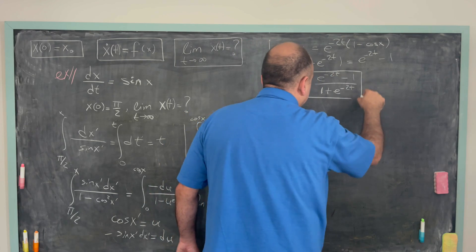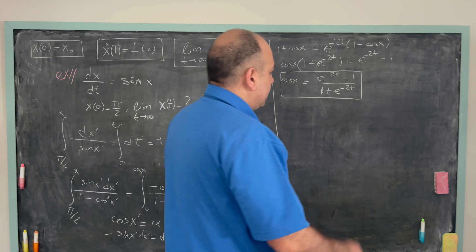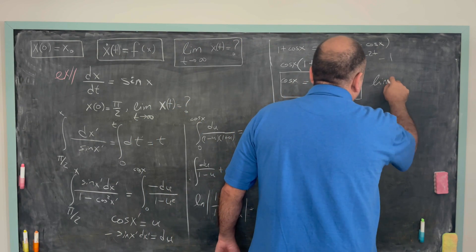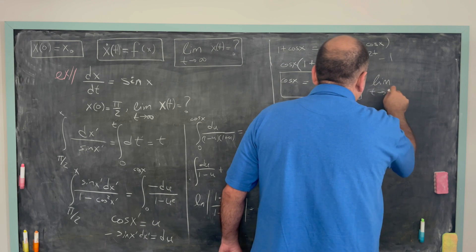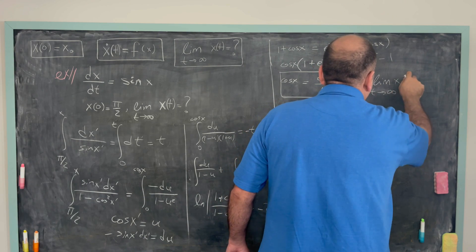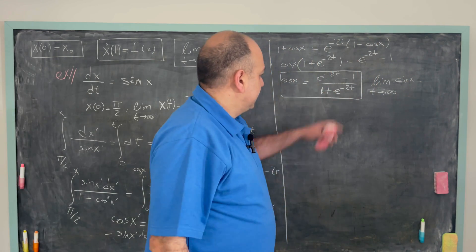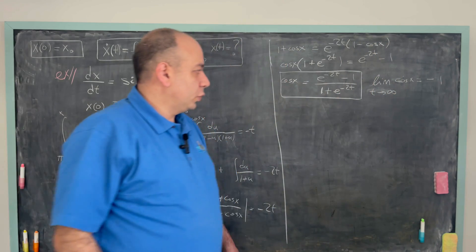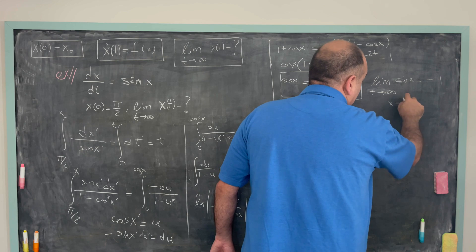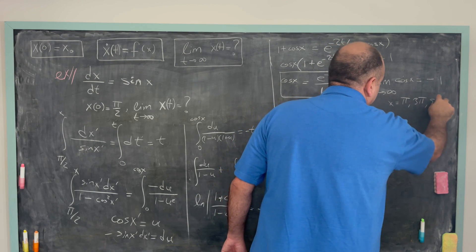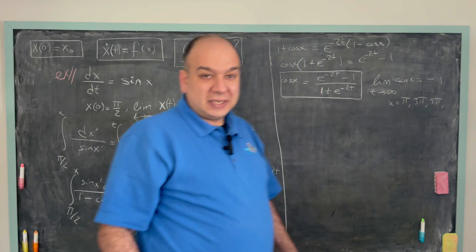So we have cos x expressed in terms of t. As t goes to infinity, cos x approaches -1. Therefore x could be π, 3π, or 5π. But can x actually take multiple values like that?